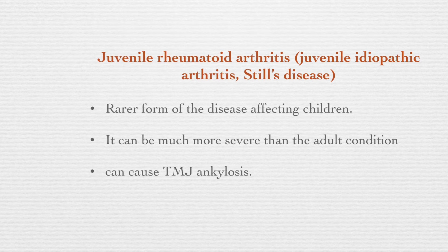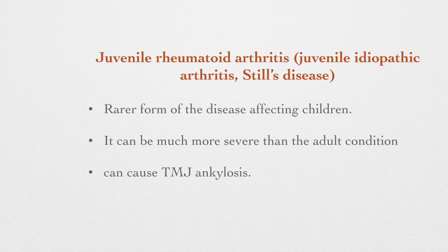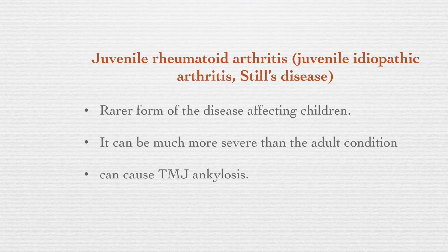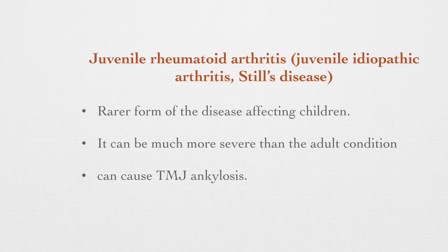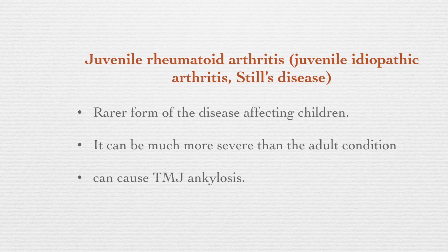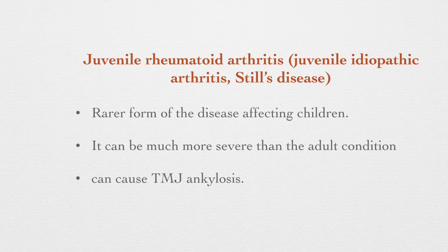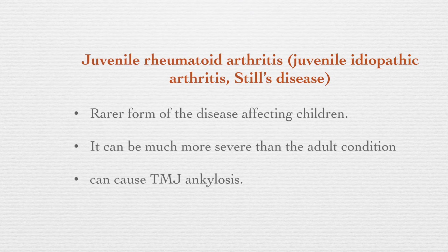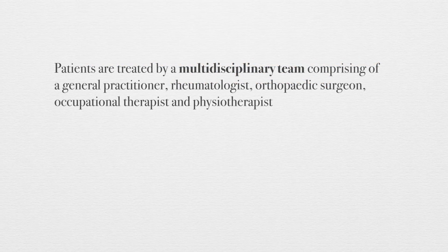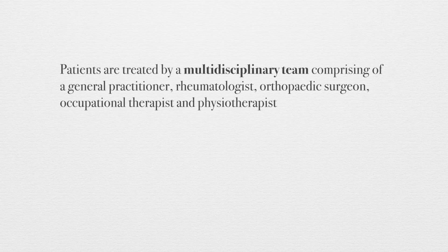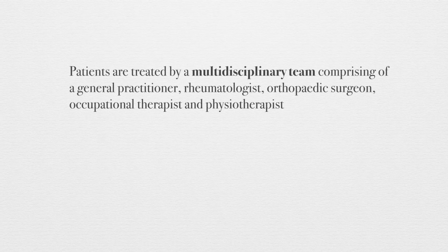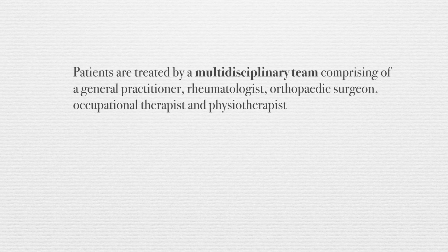Rheumatoid arthritis can also be seen in the pediatric population. When seen in children, it is called juvenile rheumatoid arthritis, Still's disease, or juvenile idiopathic arthritis. It is a rarer form of the disease but more severe than when seen in adults. When found in children, there are chances of TMJ ankylosis.